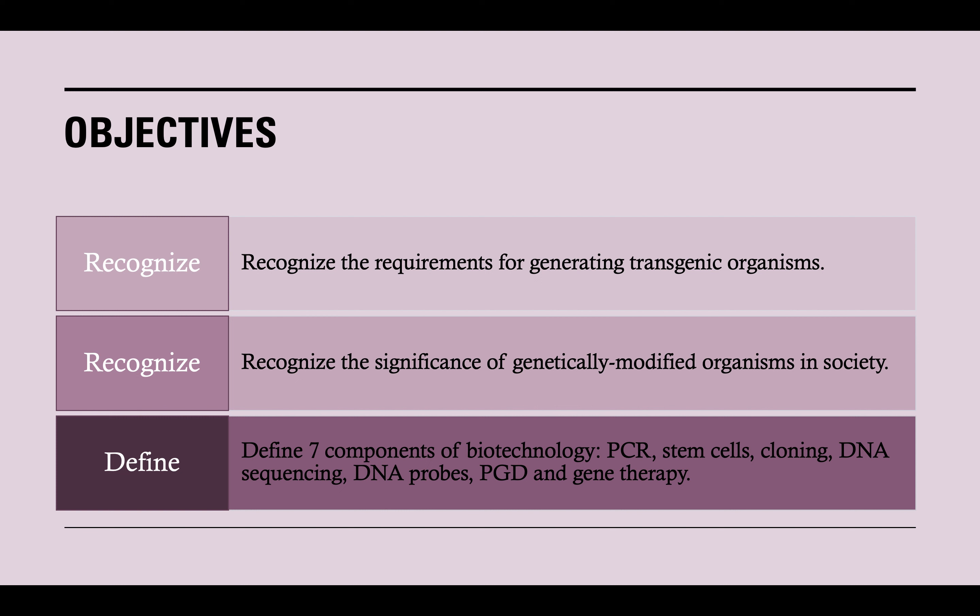We'll start off with our objectives, and there are three of them. First, we want to recognize the requirements for generating transgenic organisms. We also want to recognize the significance of genetically modified organisms in society, and we want to define the seven components of biotechnology, which are PCR, stem cells, cloning, DNA sequencing, DNA probes, PGD, and gene therapy.